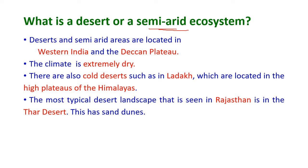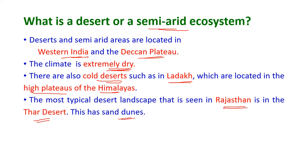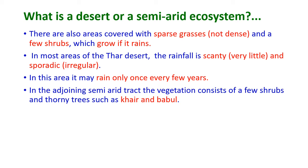The desert can also be called a semi-arid ecosystem. Deserts and semi-arid areas are located in western India on the Deccan plateau. The climate in the desert is extremely dry with very high temperatures. There are also cold deserts such as the Ladakh area, located in the high plateaus of the Himalayas. The most typical desert landscape seen in Rajasthan is in the Thar Desert, which has sand dunes.